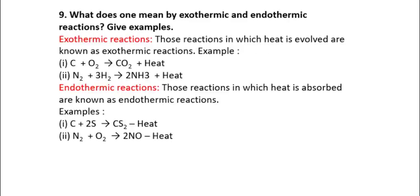Those reactions in which heat is evolved or released are known as exothermic reactions. Example: C plus O2 arrow CO2 plus heat. Heat is in the form of a product. This is an example of carbon plus oxygen reaction. Nitrogen and hydrogen reaction when ammonia is formed - heat is released as a product.